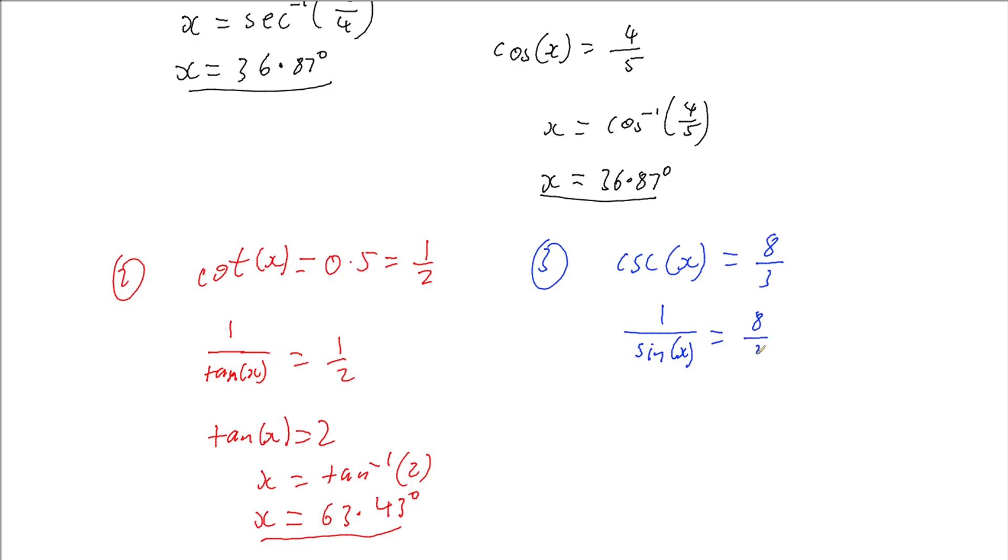So we have 1 over sin of x equals 8 thirds, which means we have the sin of x equals 3 eighths. So we can find the inverse sin of 3 eighths. Putting that into our calculator, we get 22.02 degrees. And we're done.